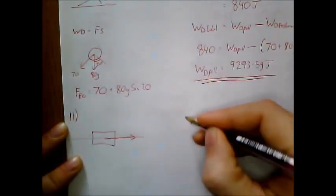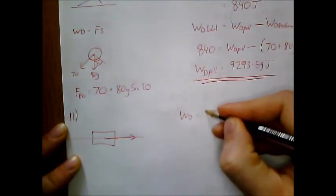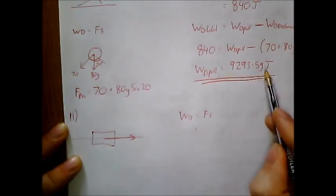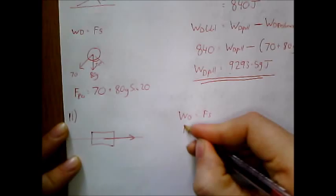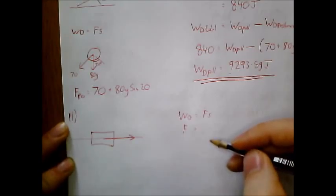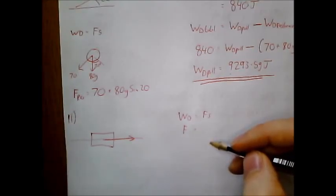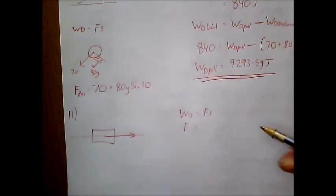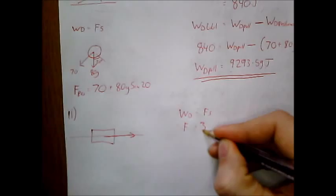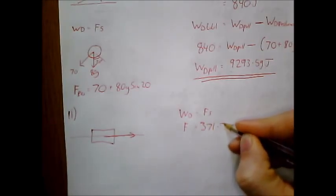So, using work done equals force times distance, we know the work done because we know the distance. So, the overall force parallel to our hill is going to be 9,293 divided by 25, which is 371.74 newtons.